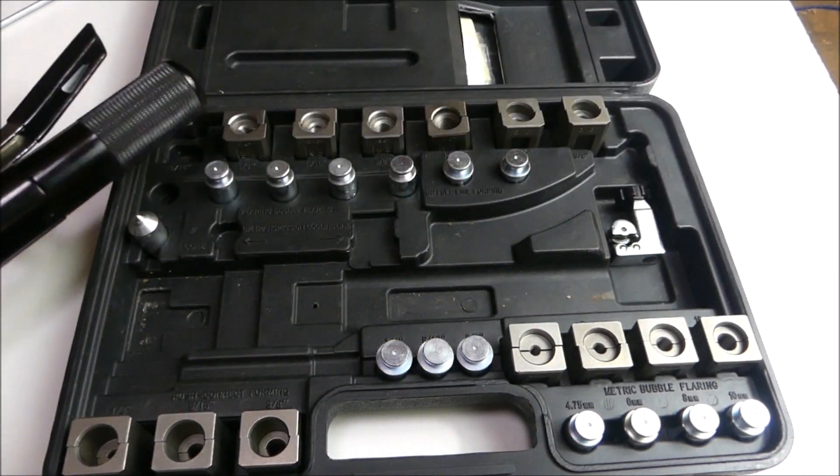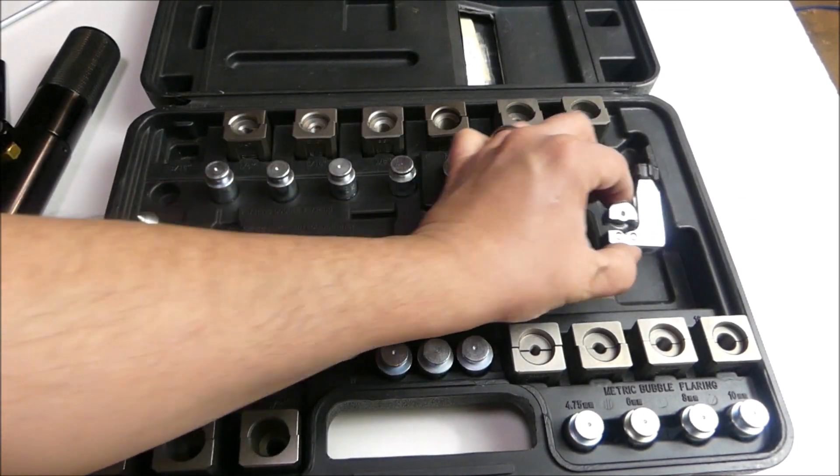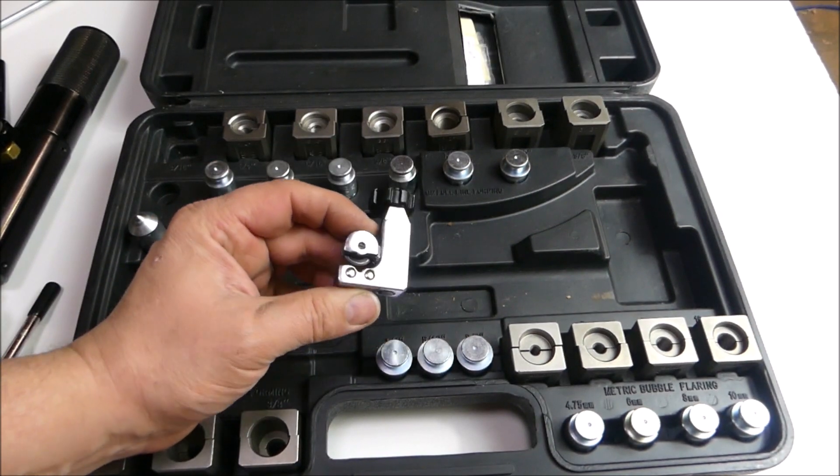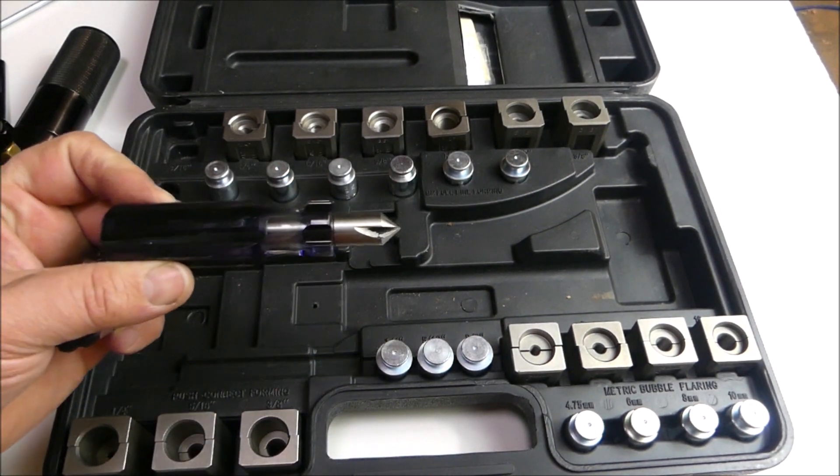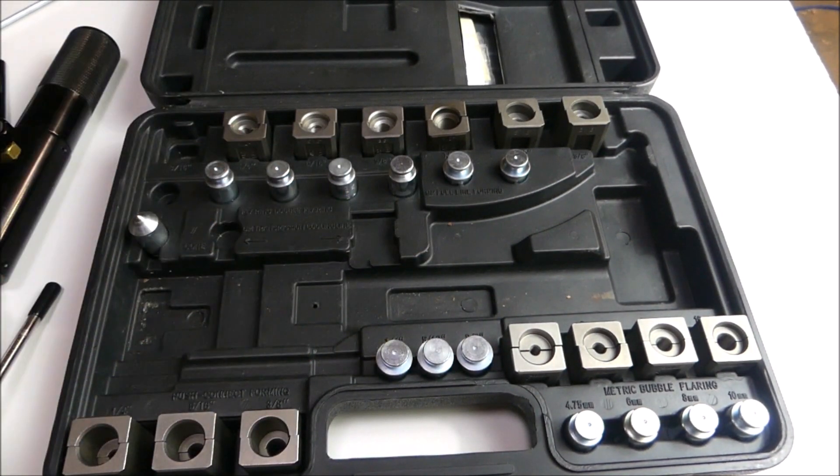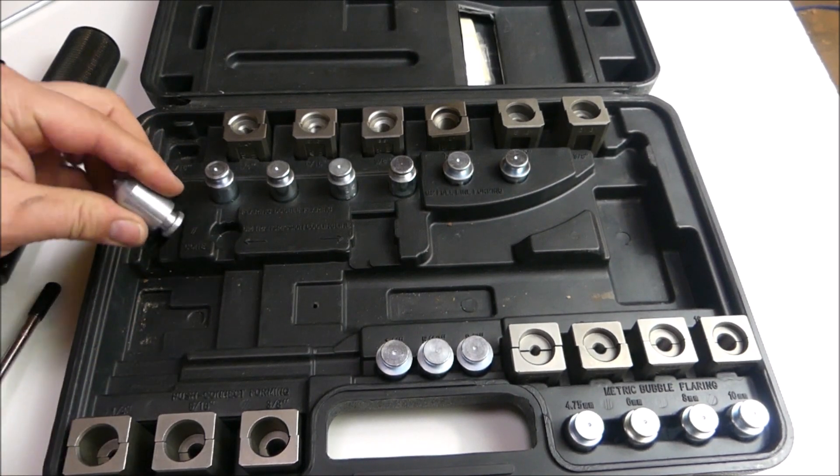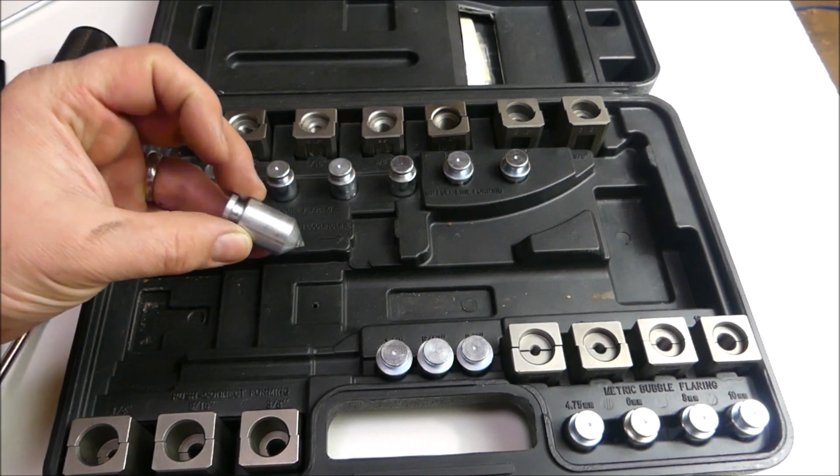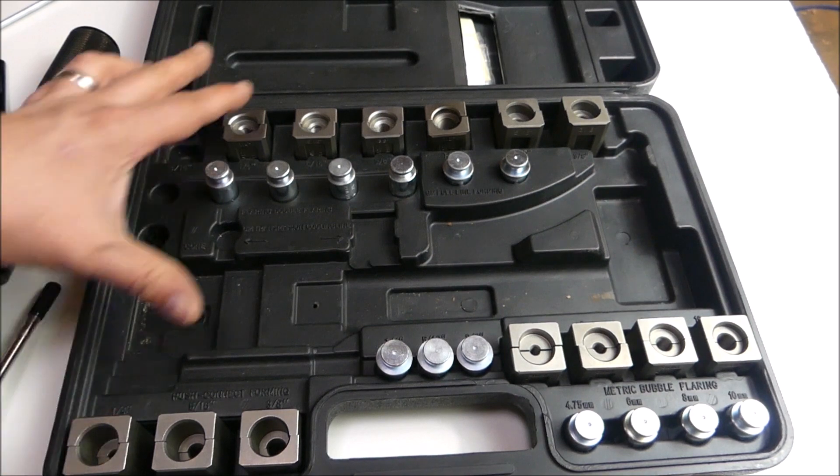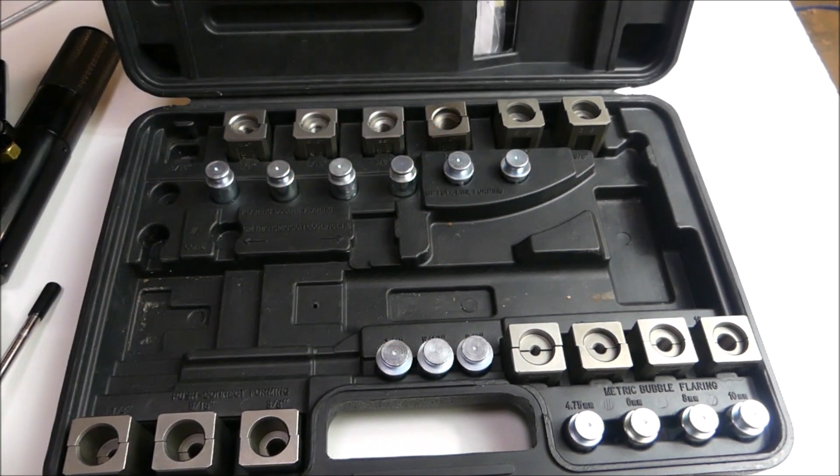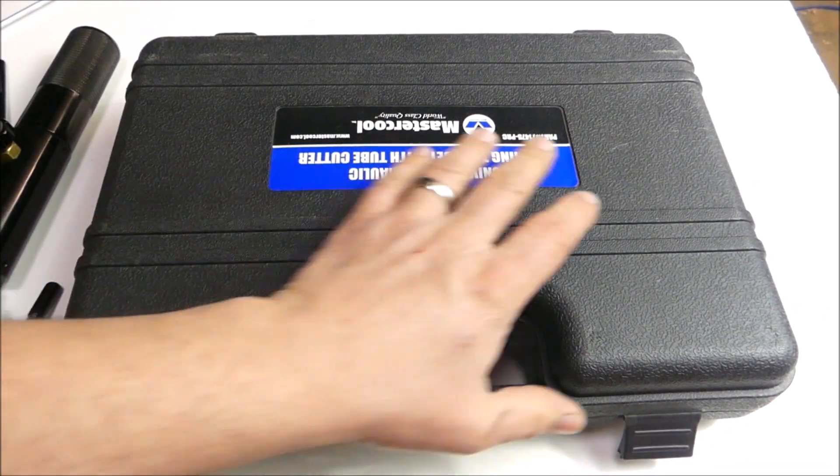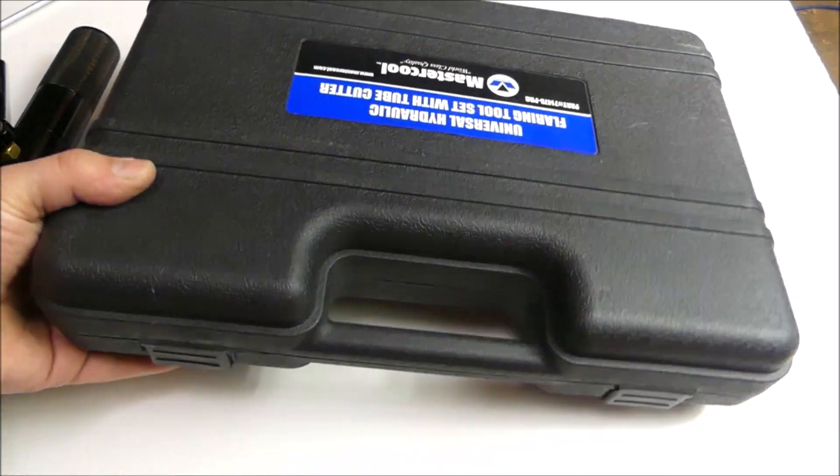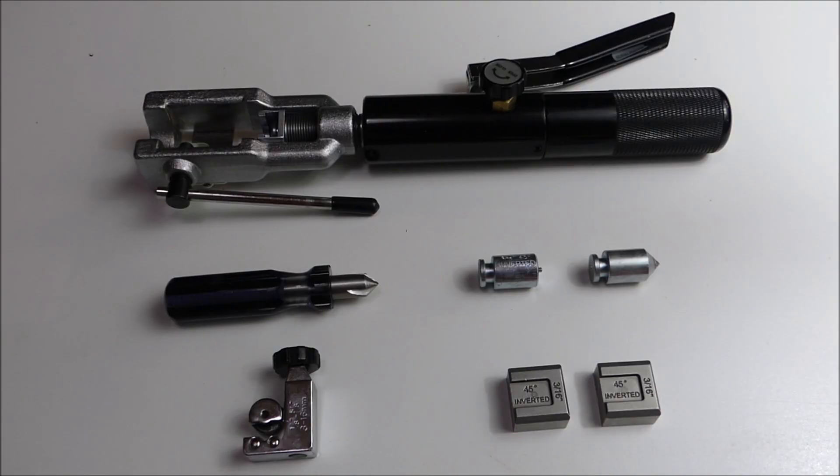We'll also need the tool, we'll need a tubing cutter, and we'll need a deburring tool. We'll also need the cone to make the second half of the flare. The rest of this kit can be set to the side for now. Now that we've located all the tools that we need, we can start making this flare.